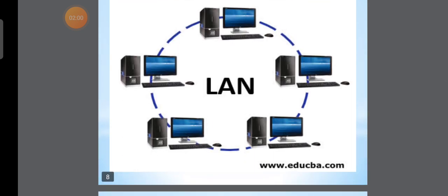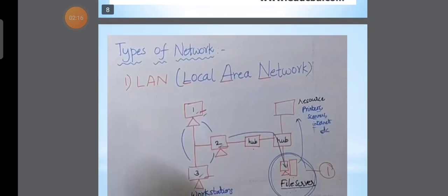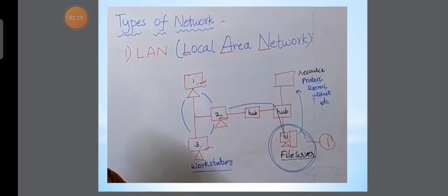In the picture, this is the LAN. Here we have Hubs. Hubs can connect to multiple computers. We connect to the Hub's file server. The data in the computers can be sent to the file server, and that file server can be used to access the data.